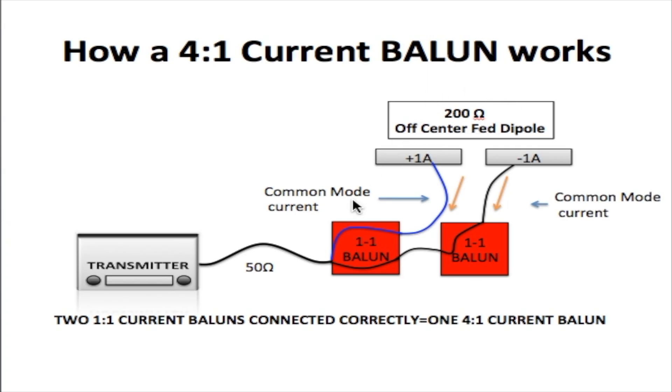The 1:1 couldn't do that. The 1:1 just connects a balanced to an unbalanced, which basically a balanced antenna to an unbalanced coaxial cable. So the 4:1 Balun also does that and it also stops common mode current. So the 4:1 Balun really does everything the 1:1 Balun does and more.